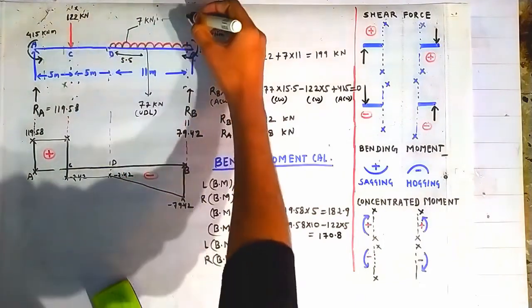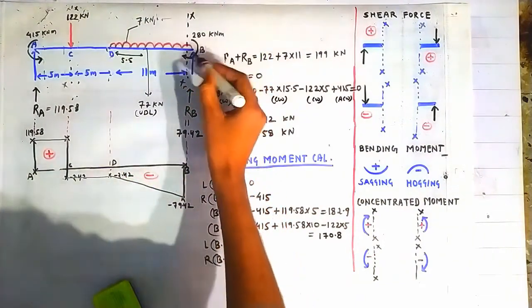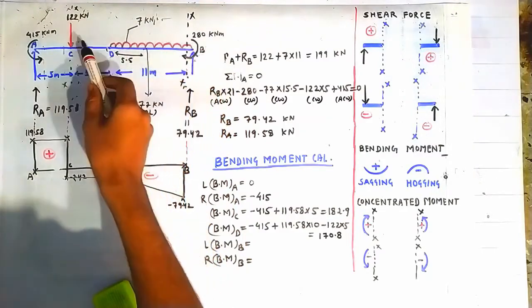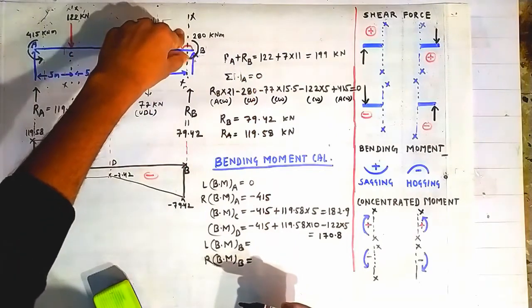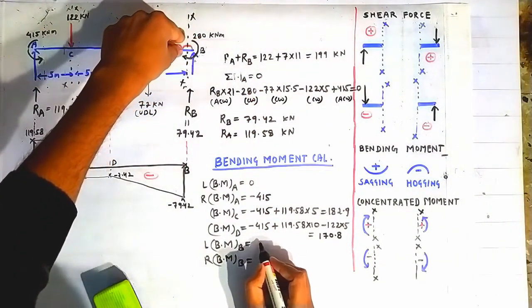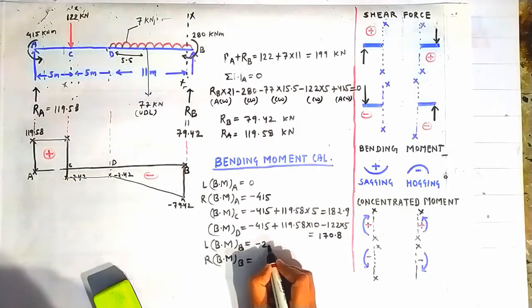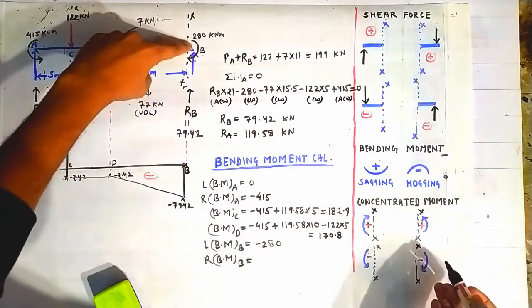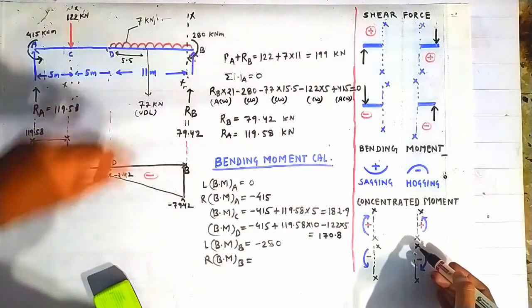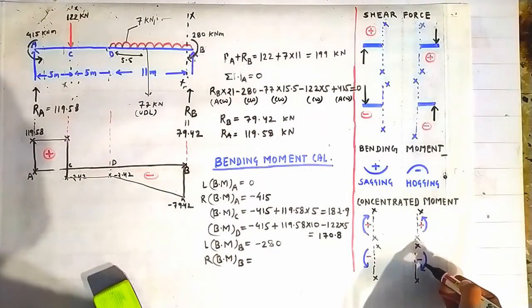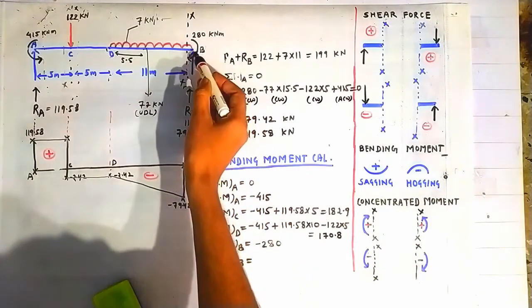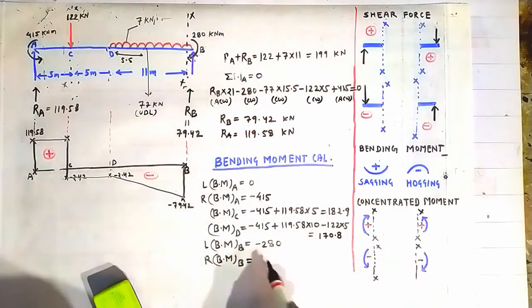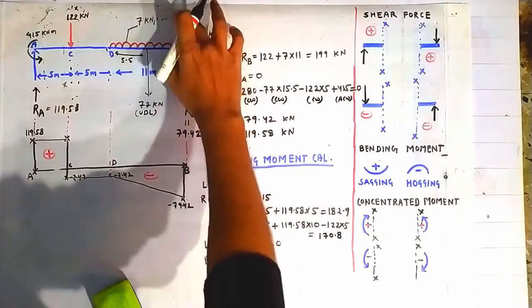For bending moment on the left side of point B, instead of looking left we look at the right side of the section, as it simplifies the calculation. On the right side, the concentrated moment of 280 kN·m acts in the clockwise direction — and a clockwise moment on the RHS of section XX is treated as negative per the sign convention. So bending moment on the left of B is −280 kN·m. Bending moment on the right side of B is zero because the beam terminates there.